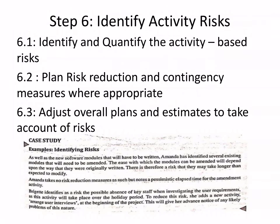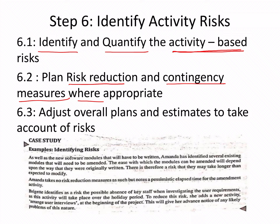Step six: identify the activity risk. Step 6.1: identify and quantify activity-based risk. Step 6.2: plan risk reduction and contingency measures wherever appropriate — once you identify the risk, discuss how you will reduce it and what contingency measures will be taken and where. Step 6.3: adjust all plans and estimates to account for the risk. A case study example is given here which you can go through.